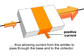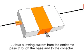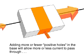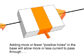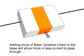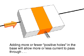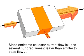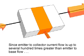allow more electrons to come from the emitter and pass through the base to the collector. Adding more or fewer holes into the base with positive current allows more or less current flow from emitter to collector, like a throttle controlling the speed of an engine.